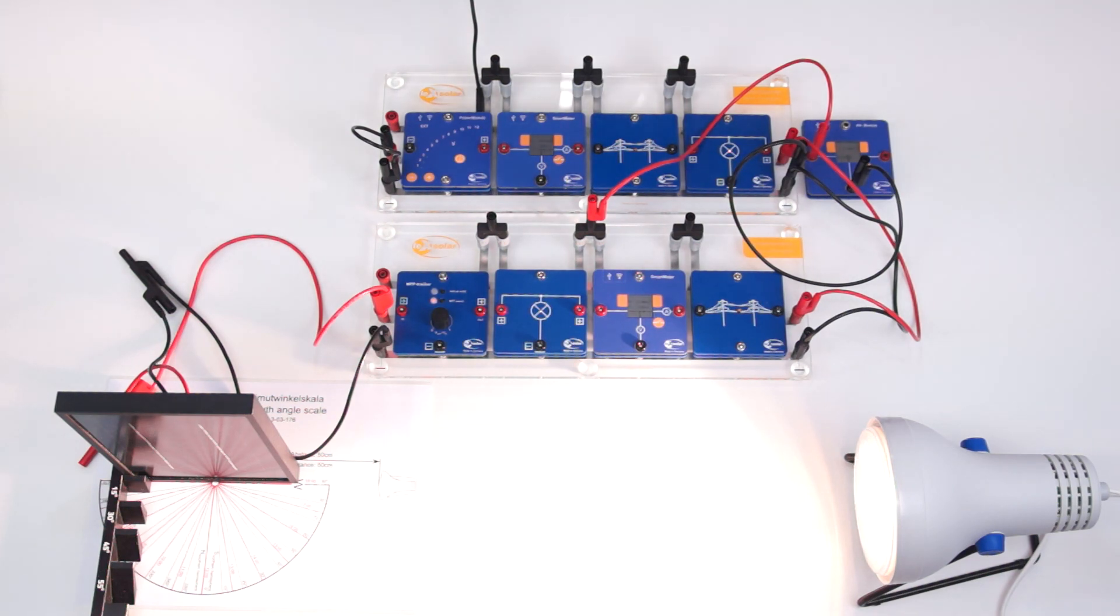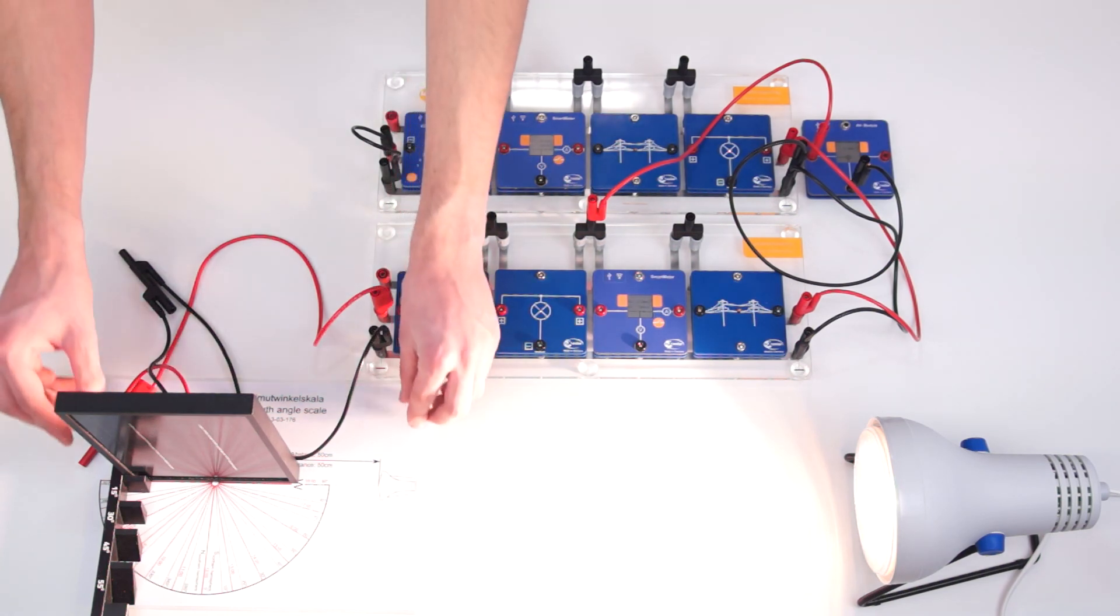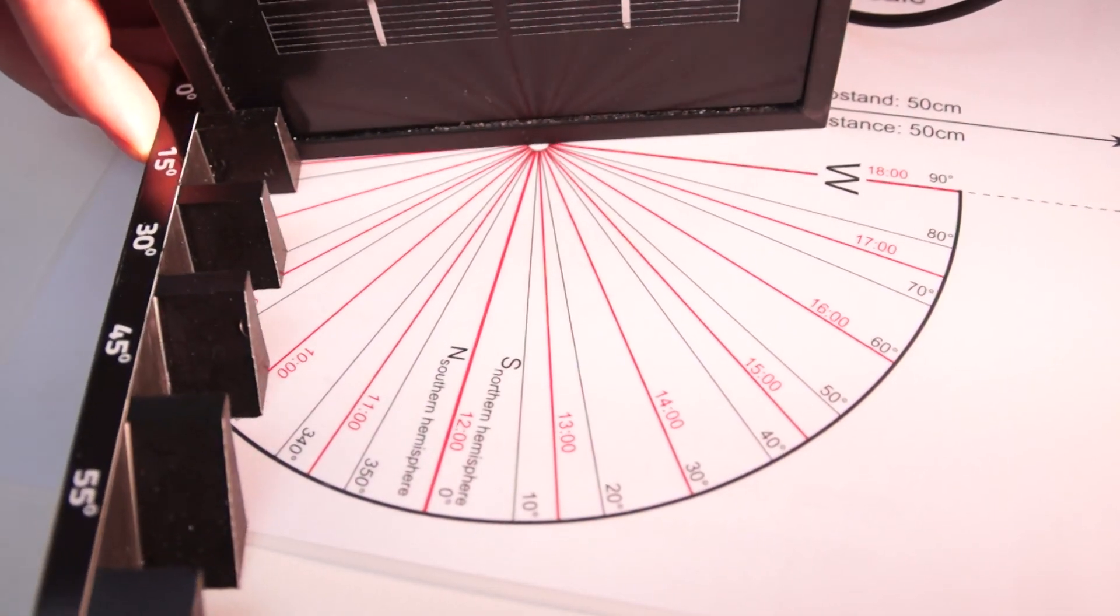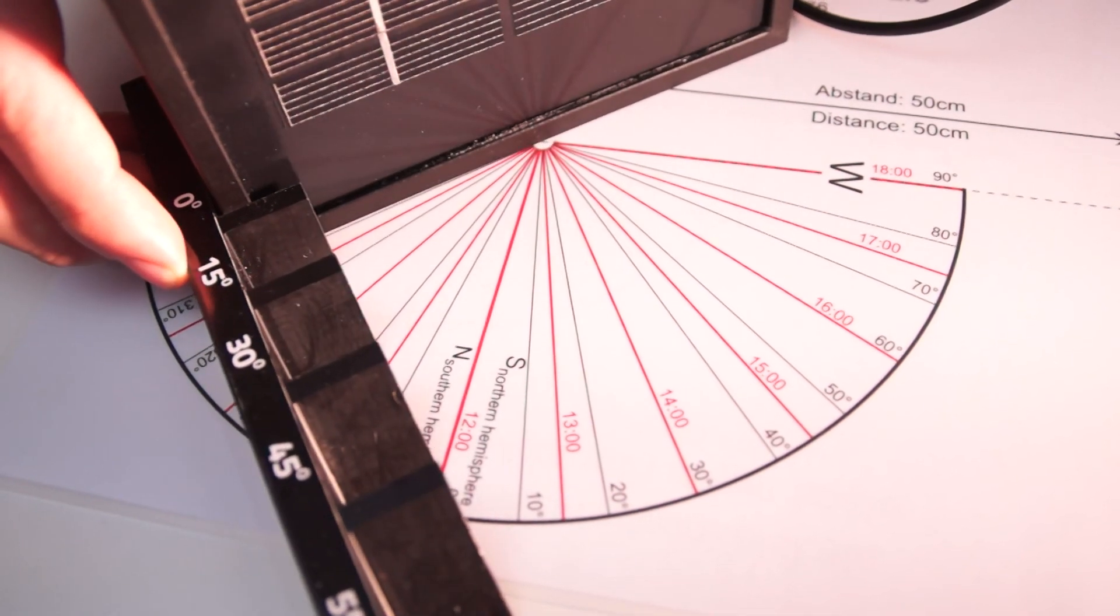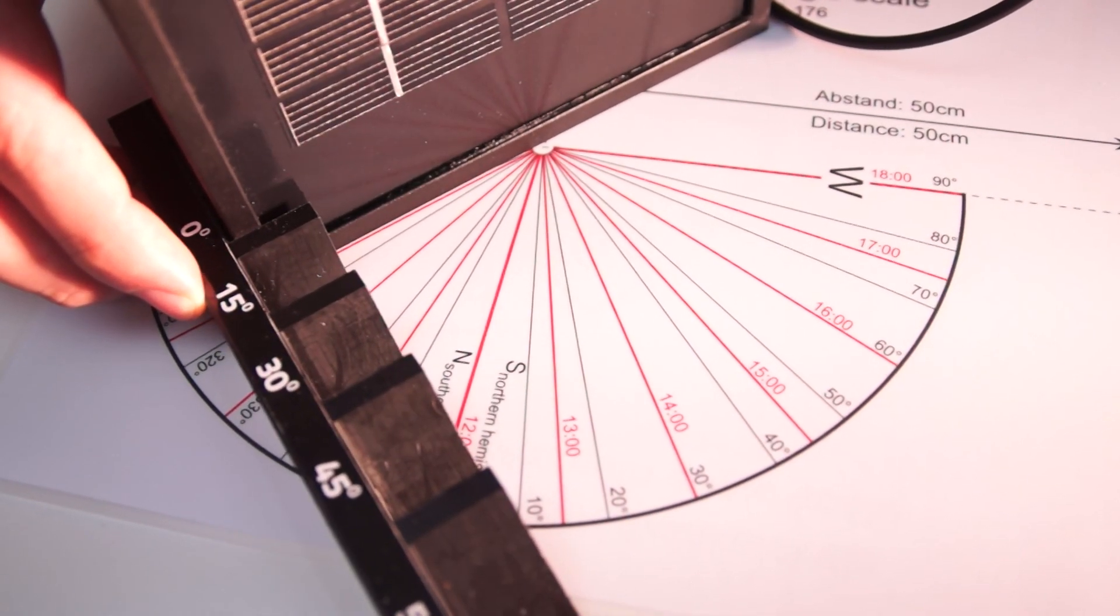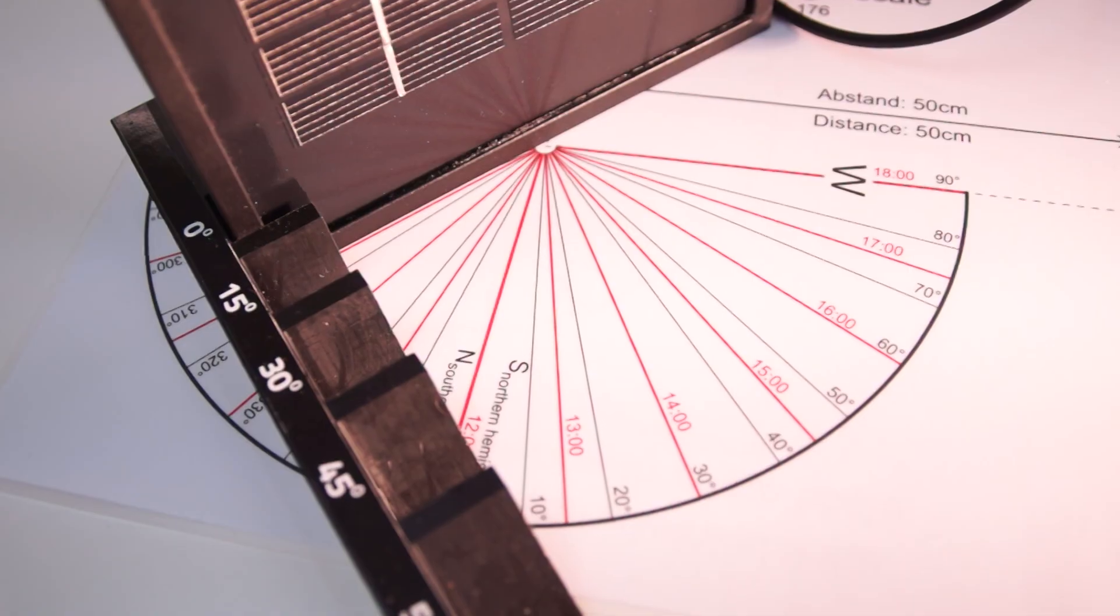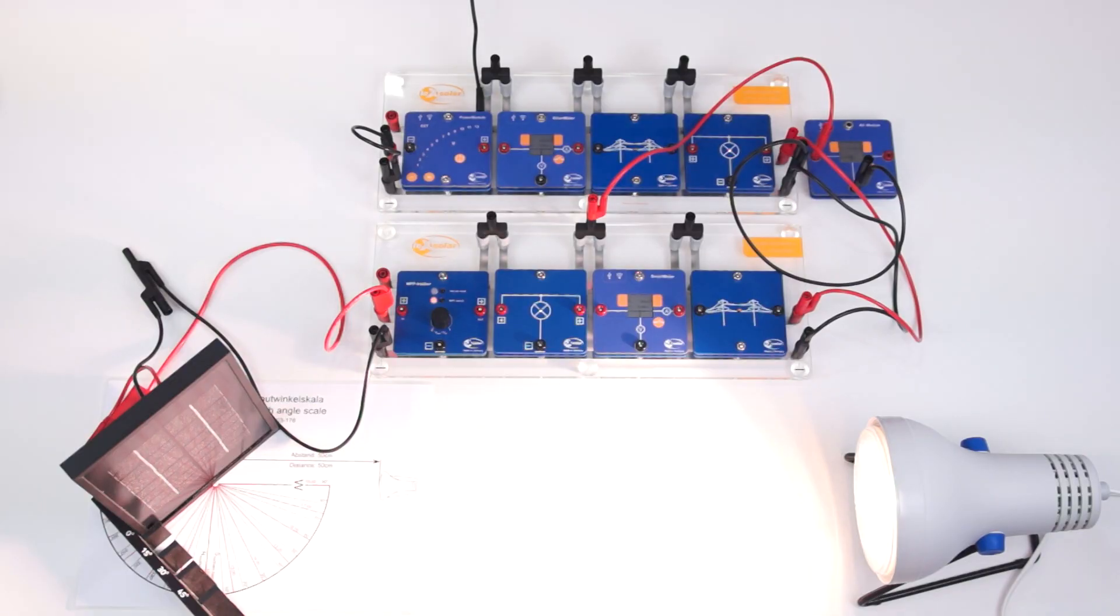We now increase the power output by decreasing the irradiation on the solar module. To this end, we reduce the angle of incidence to 45 degrees. This corresponds to the position of the sun at 9 o'clock. After the alignment of the solar module, we firstly detect that the sign of the power at the second household is reversed.